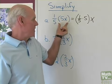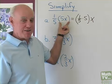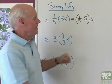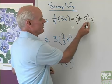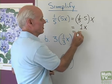So that's the associative property that allows us, since it's all multiplication here, to change the grouping from 5 and x to 1/5 and 5. Now I can just multiply 1/5 times 5, that's 1, times x is going to be just x.